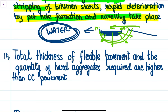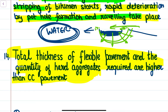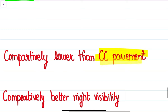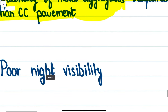The next difference is that the total thickness of flexible pavements and the quantity of hard aggregate required are higher than those of rigid or cement concrete pavement. Since flexible pavements have little to no flexure strength, each layer thickness increases, and since aggregates are the main load-bearing component, the quantity of aggregate also increases. In rigid pavement, comparatively less aggregate is required and the overall thickness is smaller.